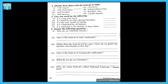Fifth one: what do we do on Christmas? Christmas pe hum kya karte hain? Answer: on Christmas, people decorate Christmas trees and go to church to pray — log Christmas tree ko decorate karte hain aur church jaate hain pray karne ke liye.